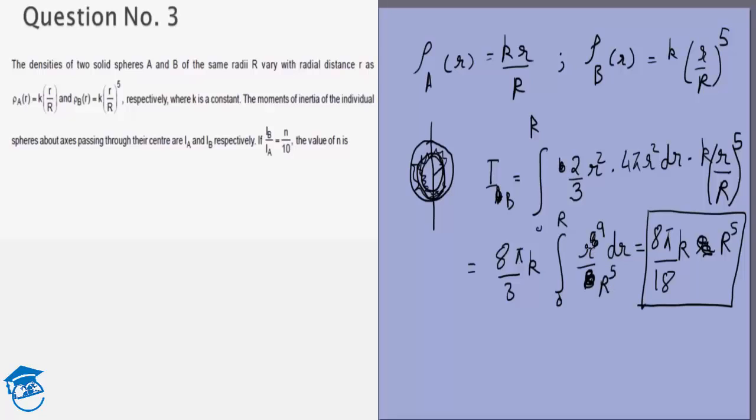So r^9 will give me r^10/10, and r^10/R^5 will be R^5. So in this case it will be 8πkR^5/30.